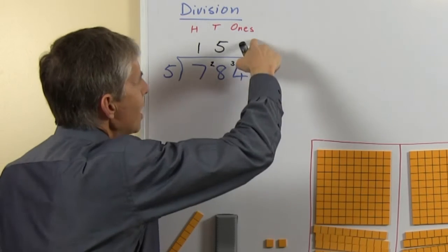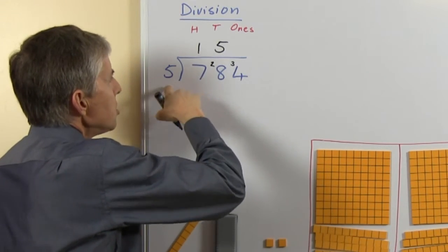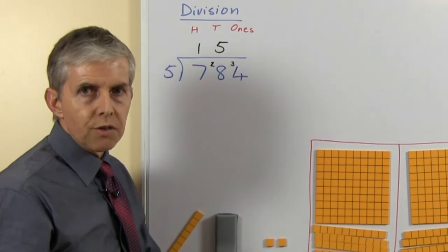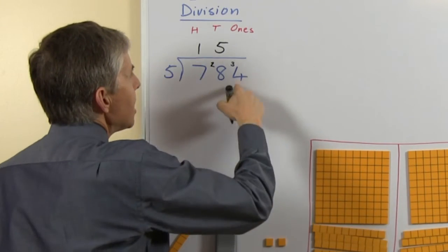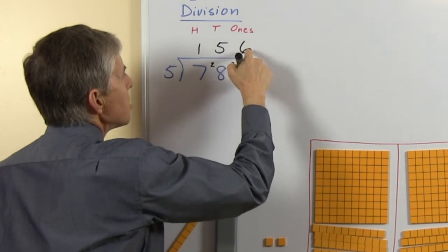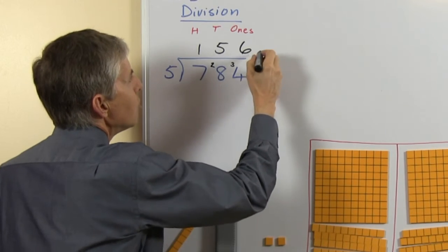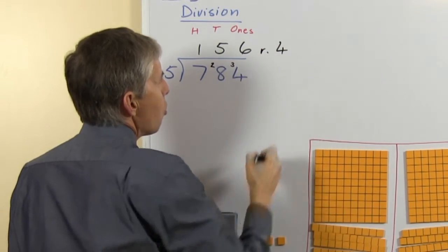Last bit, this is the ones, 34 shared among 5, think of your 5 times table again, the answer will be 6 because 6 fives are 30 and there will be a remainder of 4.